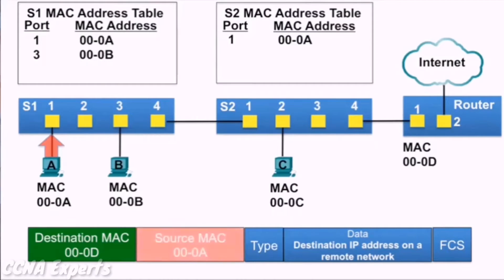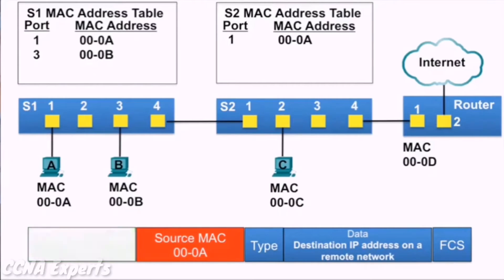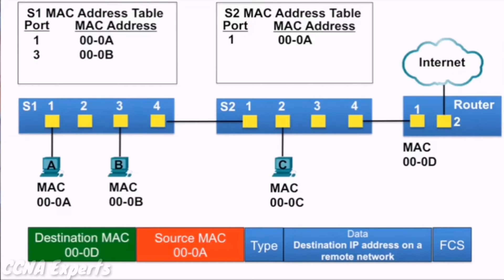Switch S1 receives the frame and examines the source MAC address, which is in its MAC address table, so it simply refreshes the five-minute timer. It then examines the destination MAC address, and because that destination MAC address is not in the MAC address table of switch S1, it floods it out all ports.